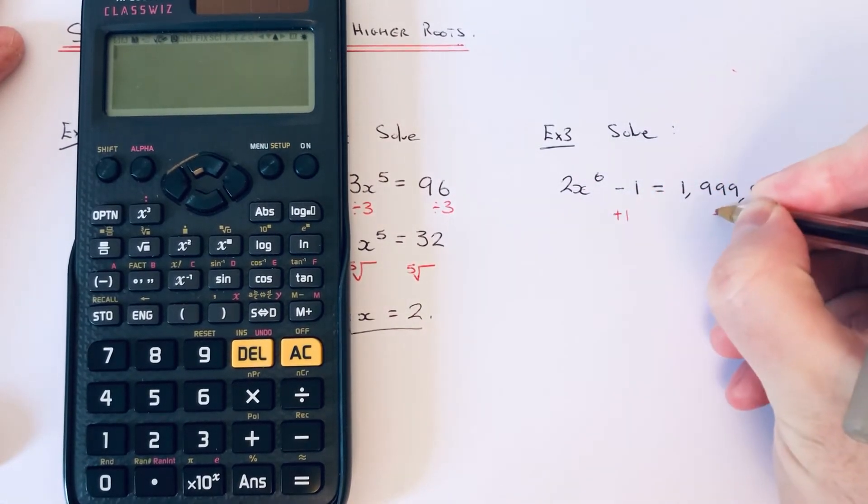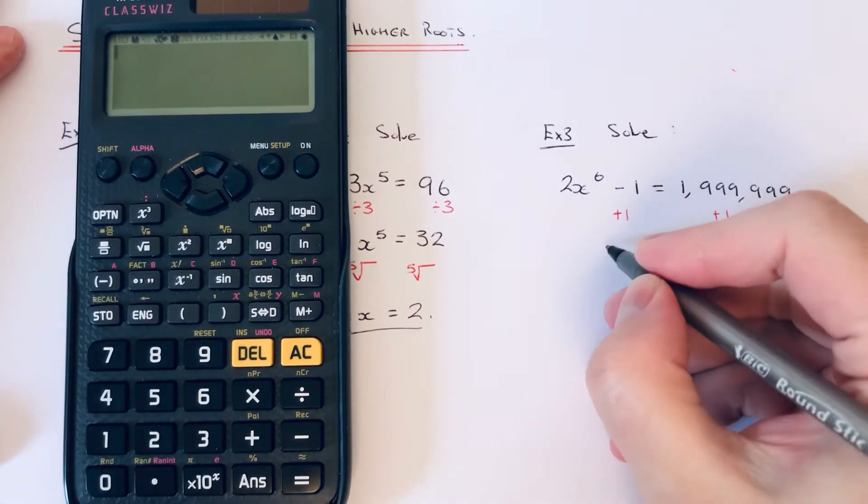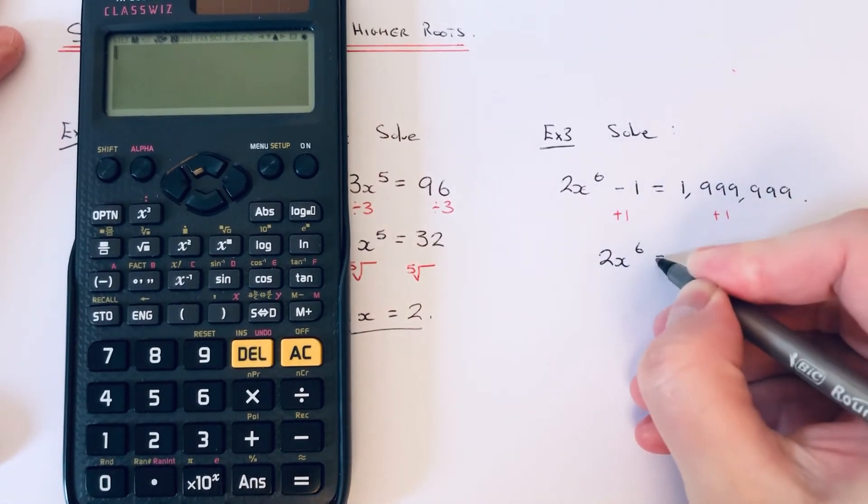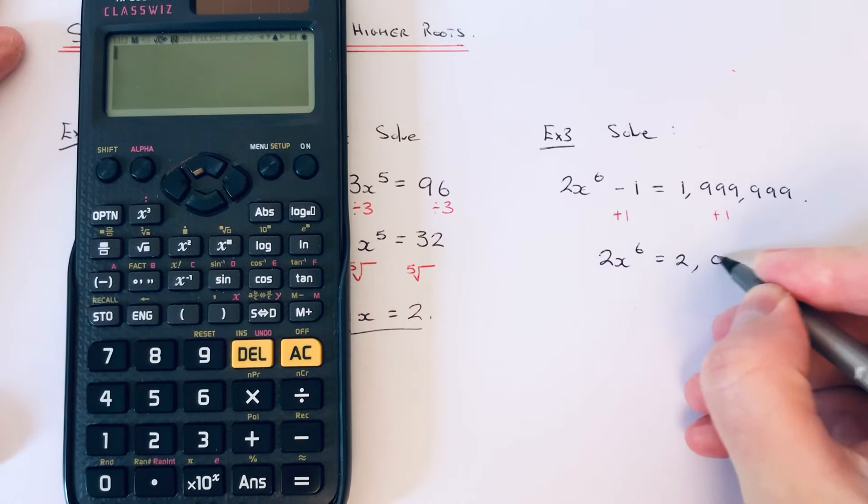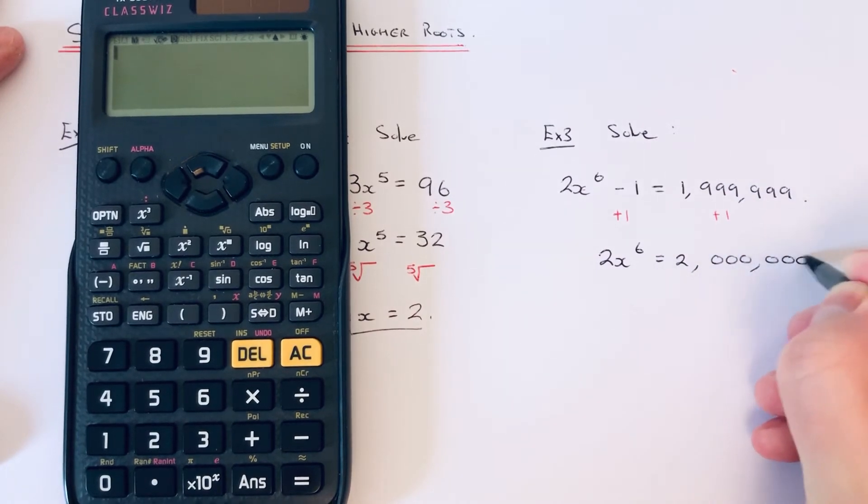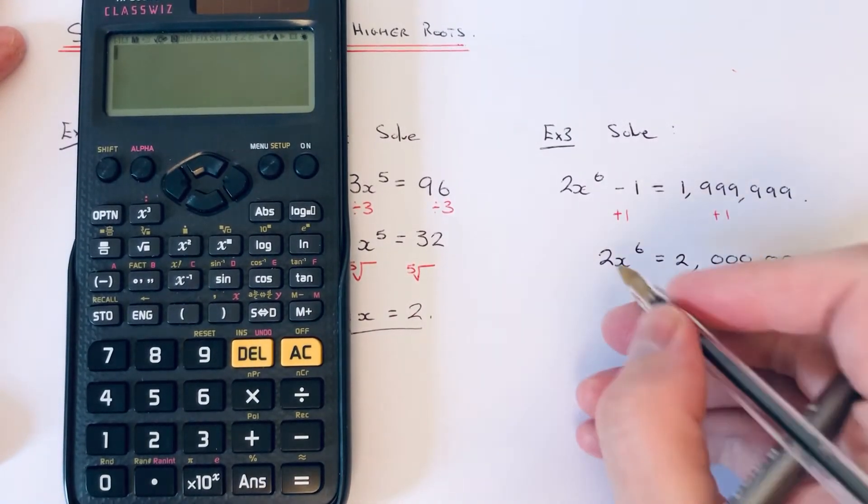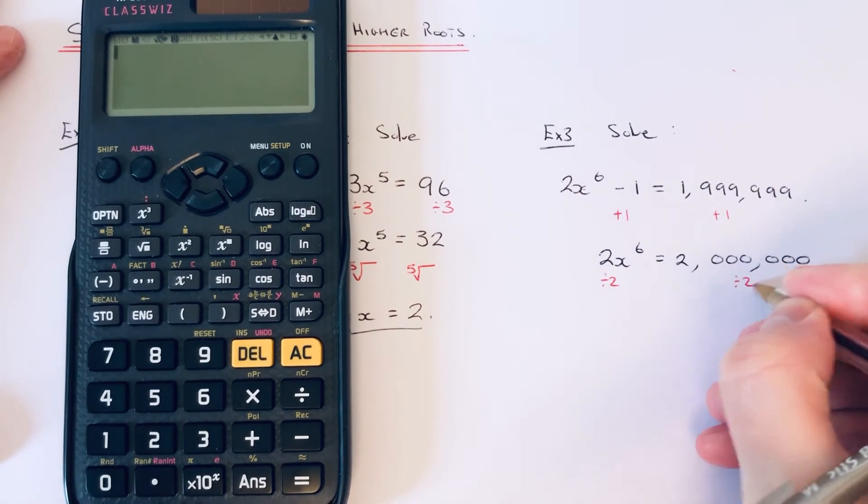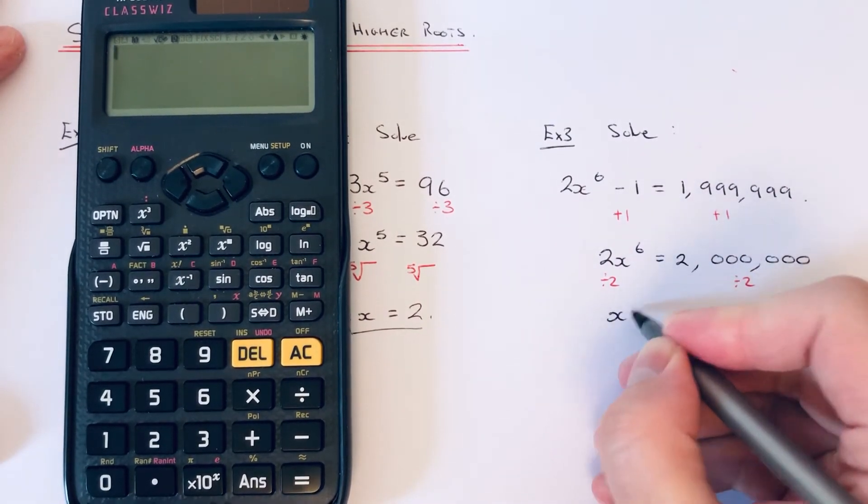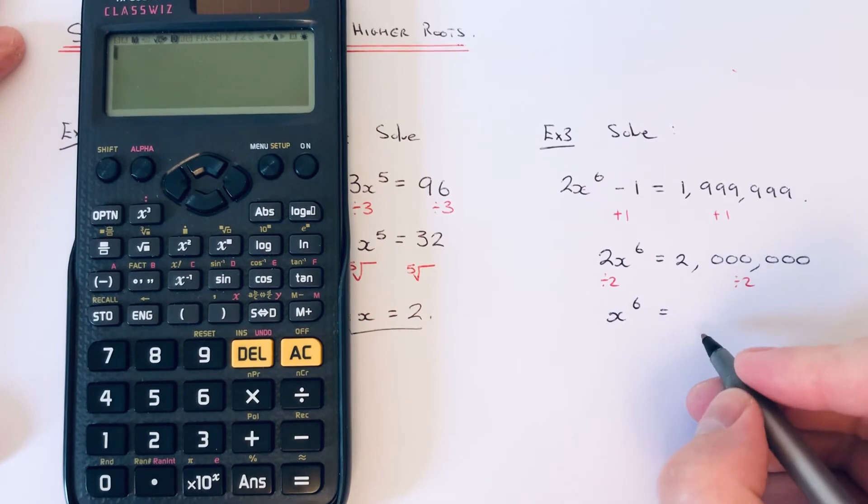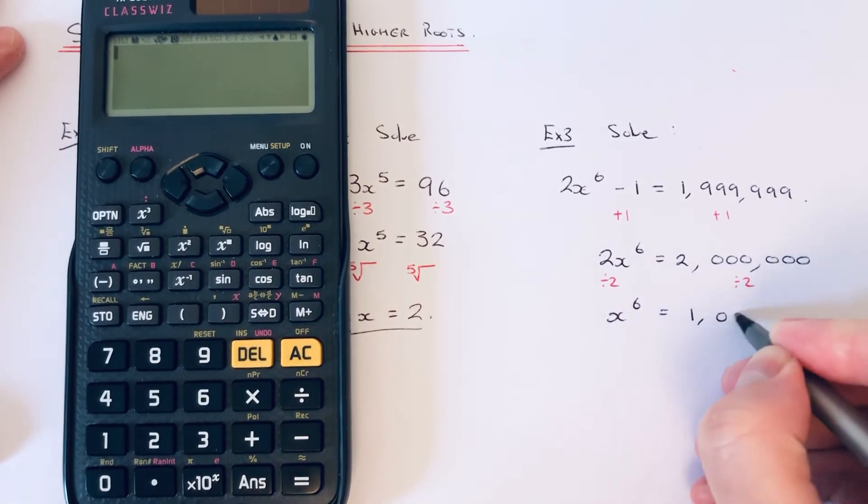That'll give us 2x to the power of 6 equals 2 million. Now we can get rid of the 2 by dividing by 2, which leaves us with x to the power of 6 equals 1 million.